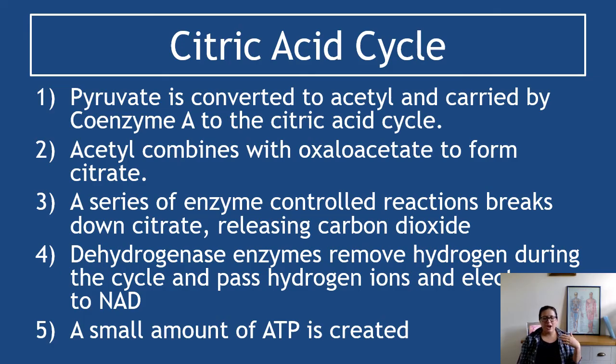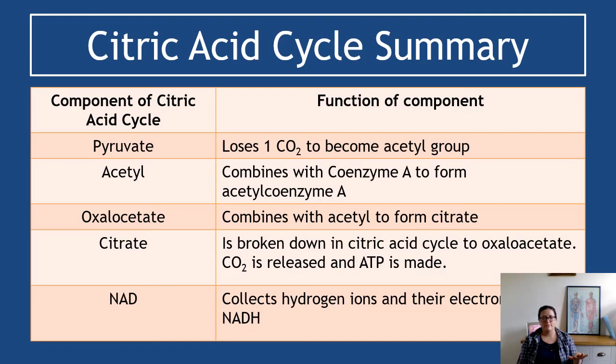If you are asked in an exam, describe the citric acid cycle, and it's worth five marks or 10 marks, these are the words that you want to be using. Pyruvate converted to acetyl, carried by coenzyme A to the citric acid cycle. Acetyl combines with oxaloacetate to form citrate. A series of enzyme controlled reactions breaks down citrate, releasing carbon dioxide. Dehydrogenase enzymes remove hydrogen during the cycle, pass hydrogen ions and electrons to NAD to create NADH, and a small amount of ATP is created. Five facts. I think it is possible to learn these five facts about this process.